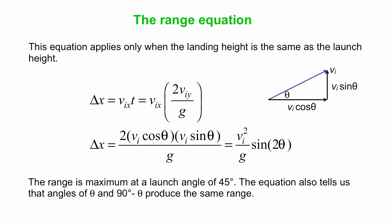Now, sine of 90 is maximum. Sine of 90 is 1, that's the biggest sine could be. So 2 theta is 90, theta is 45 degrees, which maximizes the range. Also, this equation will tell us that angles of theta and 90 minus theta produce the same range.